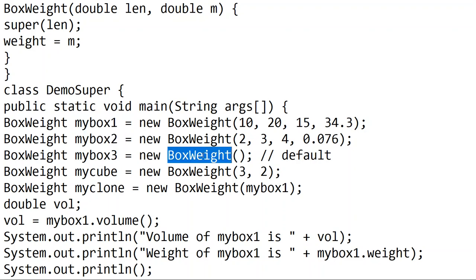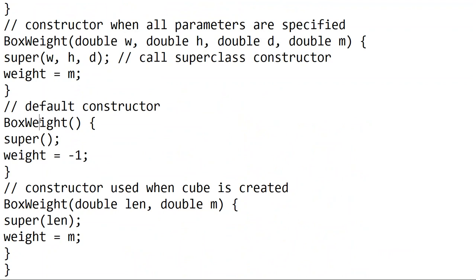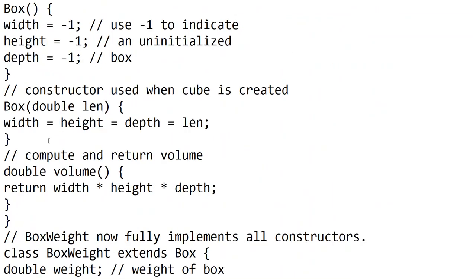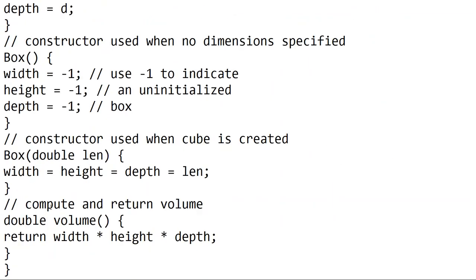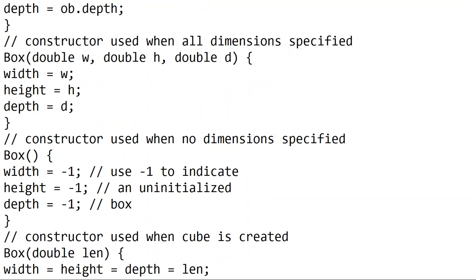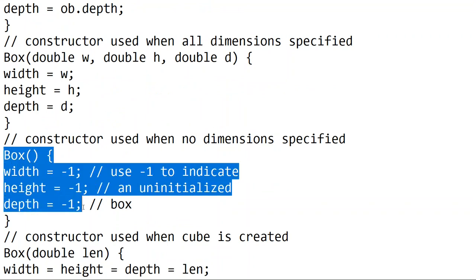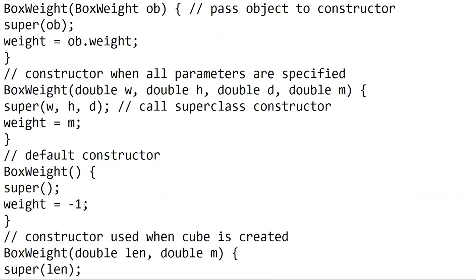In the default constructor, we call the default BoxWeight constructor. MyBox3 equals new BoxWeight with the default constructor. The default constructor calls super, which sets width, height, and depth to minus 1. Then weight is also set to minus 1.